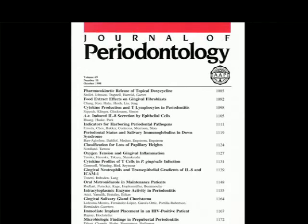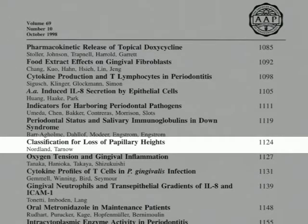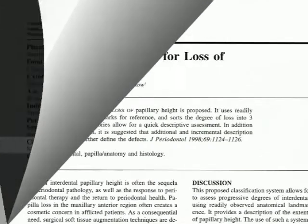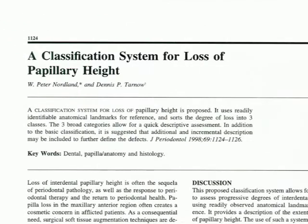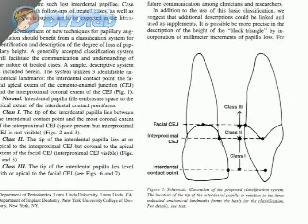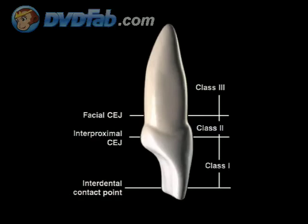First, the doctor should classify the defect. Using the Nordland Tarnow classification system, we can determine just how much change can be accomplished with any papilla regeneration technique. The classification system, as published in the Journal of Periodontology, details different levels of papilla loss.